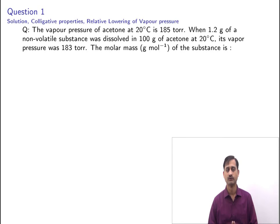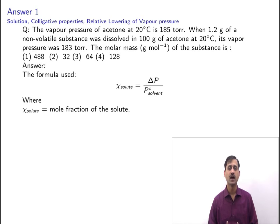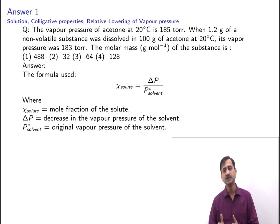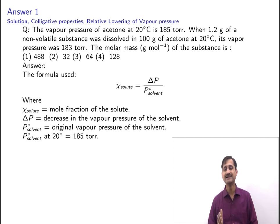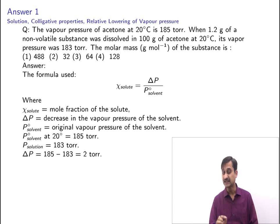The formula used here is: χ(solute) = ΔP / P°(solvent), where χ(solute) is the mole fraction of the solute, ΔP is the decrease in vapor pressure of the solvent on adding the solute, and P°(solvent) is the original vapor pressure of the solvent. The original vapor pressure of acetone at 20°C is 185 torr, and the vapor pressure after addition of solute is 183 torr, so ΔP = 2 torr.